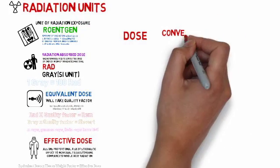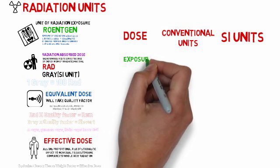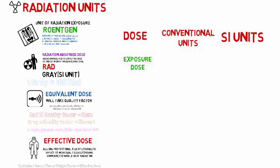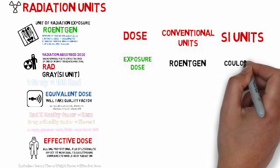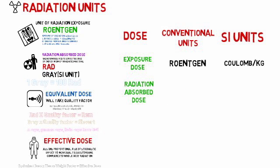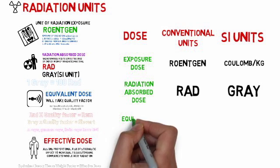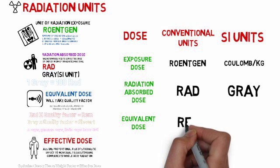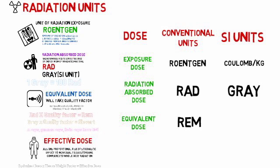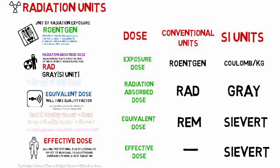Summary of dose units: Exposure dose — conventional unit is roentgen, SI unit is coulomb per kg. Radiation absorbed dose — conventional unit is rad, SI unit is gray. Equivalent dose — conventional unit is rem, SI unit is sievert. Effective dose — no conventional unit, SI unit is sievert.